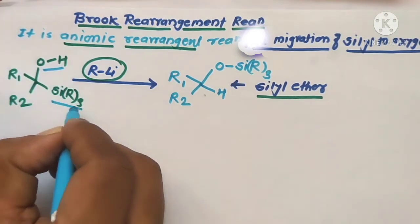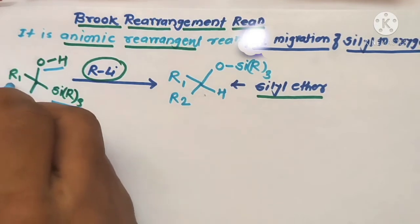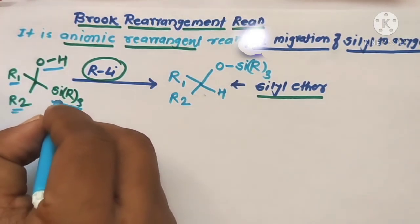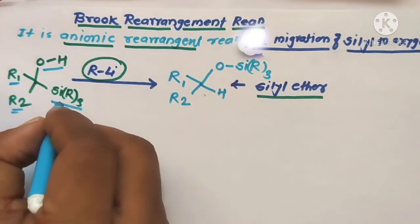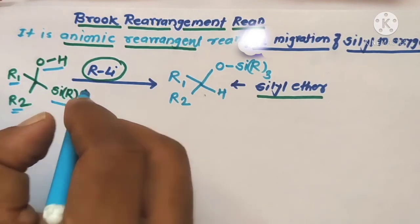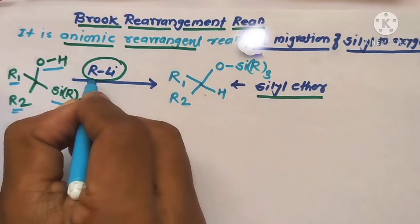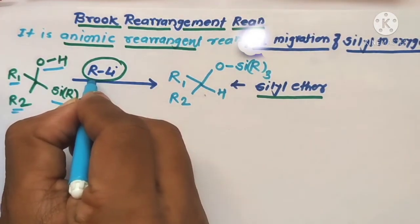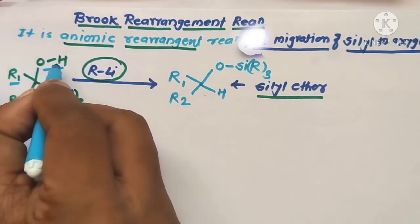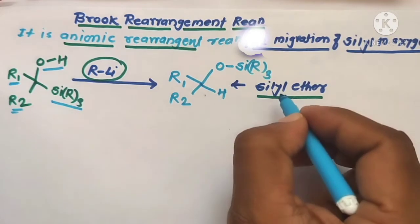The R groups on the substrate may be from aliphatic or aromatic groups. Similarly, the three groups on silicon may also be from aromatic or aliphatic groups. The reaction proceeds in the presence of a base, which is used to abstract the proton from the highly acidic oxygen-containing hydroxyl group.